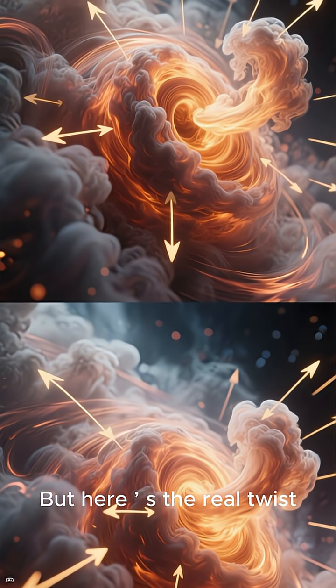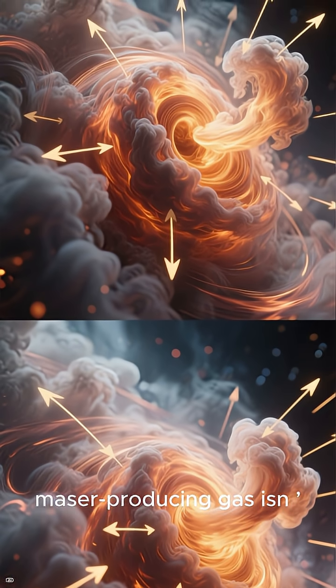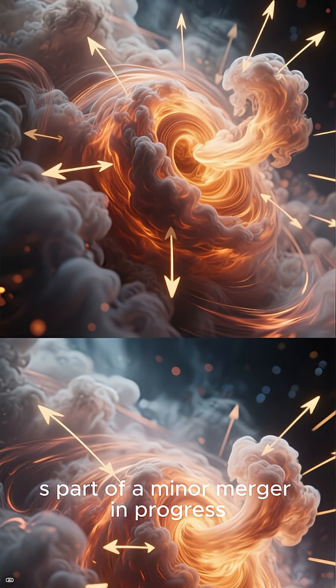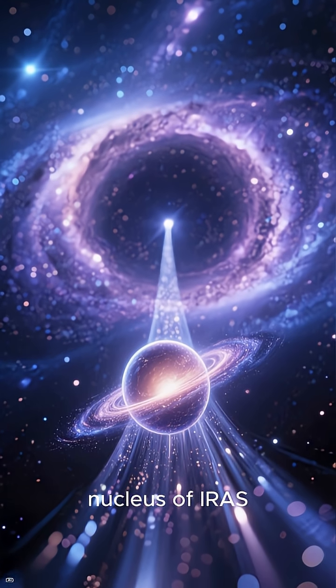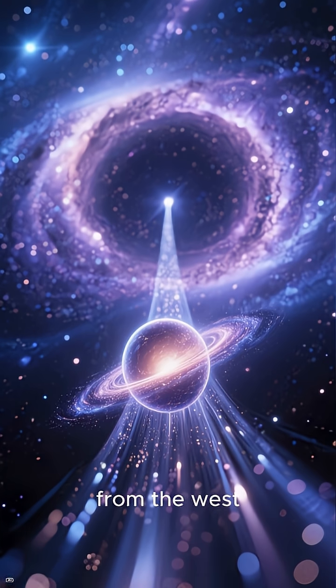But here is the real twist. The velocity pattern suggests that the maser-producing gas isn't just rotating. It's part of a minor merger in progress. A dwarf galaxy appears to be plunging almost radially into the nucleus of IRAS 15250-3609 from the west.